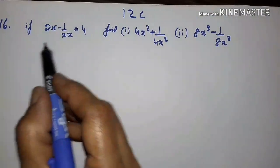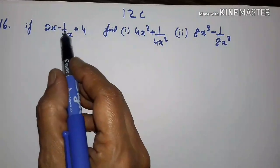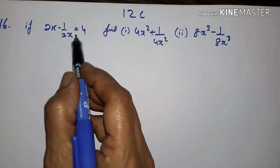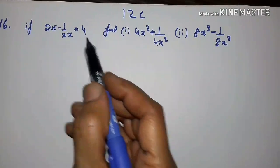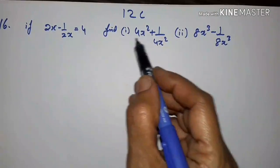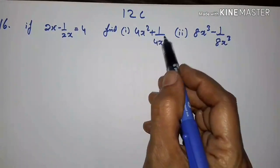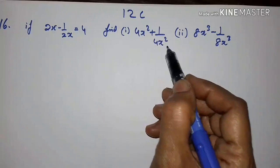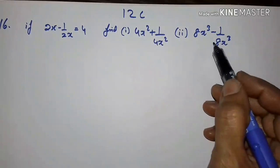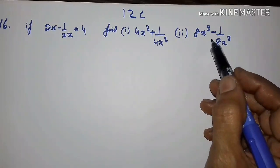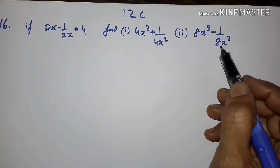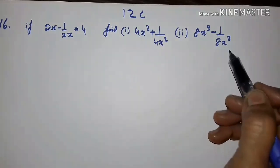16th problem: if 2x minus 1 upon 2x is equal to 4, we have to find, first, 4x squared plus 1 upon 4x squared, and second, 8x cubed minus 1 upon 8x cubed.